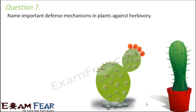Question number 7: name important defense mechanisms in plants against herbivory. Herbivores eat plants, so plants also need to protect themselves from being eaten too much. There are certain defense mechanisms — for example, in certain plants, the leaves are modified into spines. Being sharp structures, spines injure animals, so the animals try to stay away from these plants.